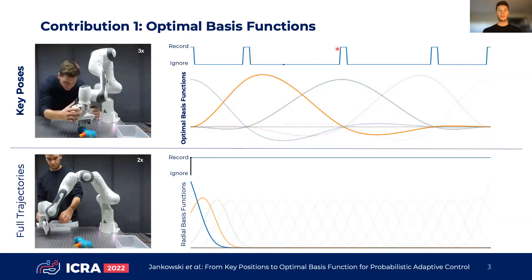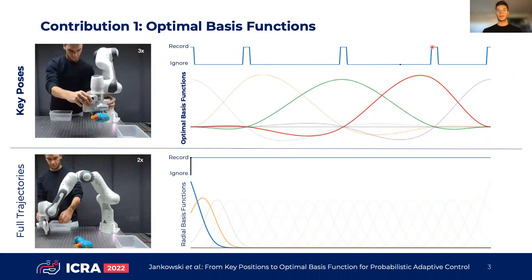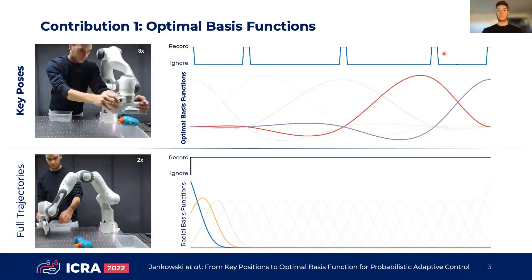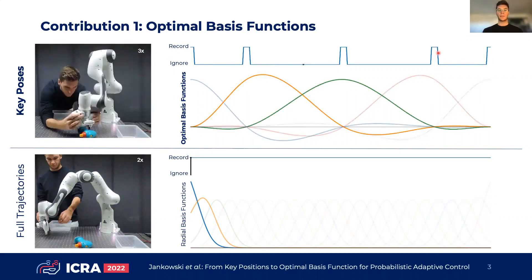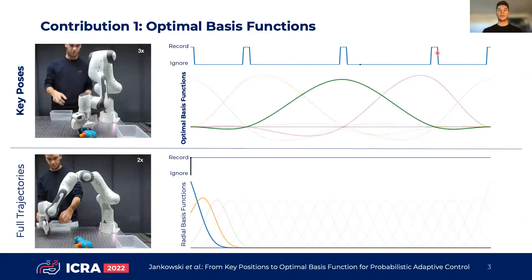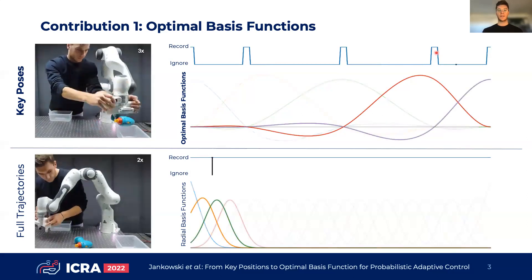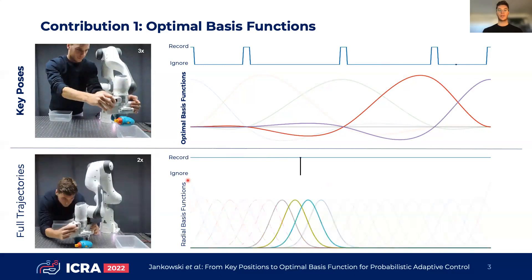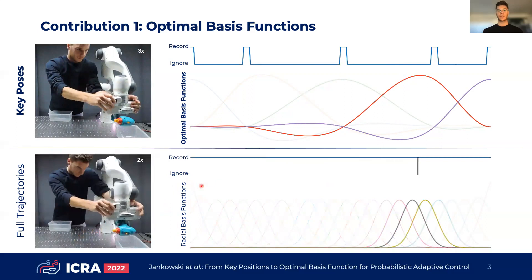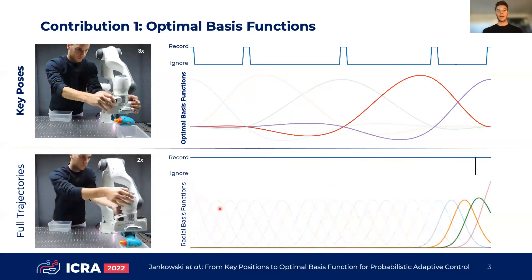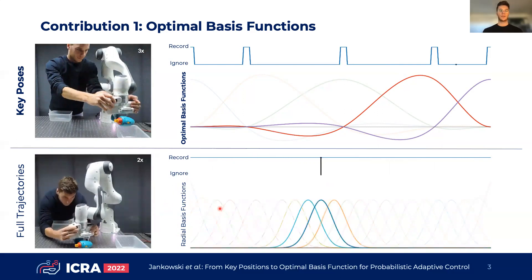The user only records the positions on the demonstrated trajectory which they perceive to be necessary to achieve the task, namely the key positions. The user therefore implicitly sets the number of movement primitives. This setup comes with the advantage that the recorded data is not corrupted by imperfections due to kinesthetic teaching, addressing and eliminating the trade-off between high resolution and data efficiency that comes with conventional basis function representations such as radial basis functions, where the corresponding weights have to be estimated from full trajectories.